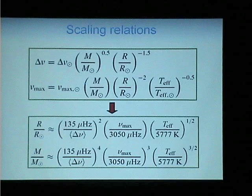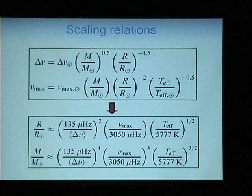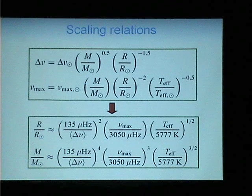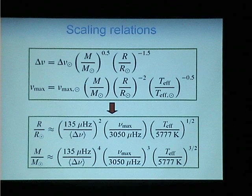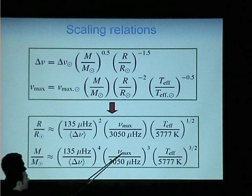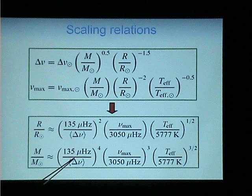That's pretty cool. On to simple scaling relations: the large separation scales as the mean stellar density, and the frequency of maximum power scales with the acoustic cutoff frequency. You can parameterize both in terms of mass, radius, and temperature. With two equations and two unknowns — effective temperature is observable — you can solve for mass and radius in terms of the large separation, the frequency of maximum power, and effective temperature. The exponents for mass are larger, so we don't expect the same precision there as for radius.